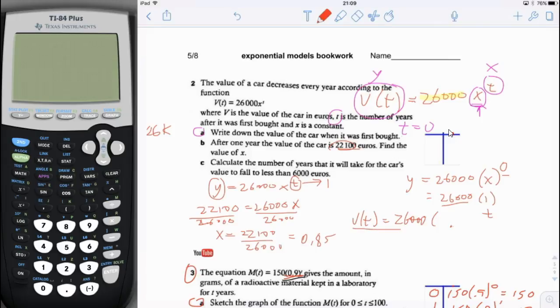And now that we have an exponential function, first thing we want to do is we want to put it in the calculator. When we put it in the calculator, we're going to replace the v of t with y and we're going to replace time with x because that's kind of what we're used to and that's what the calculator expects. So we're going to go into y equals and then we're going to clear what's there. And I'm going to put in 26,000 times 0.85 to the x. Then I'm going to graph it.